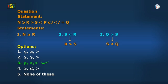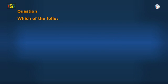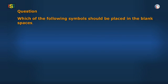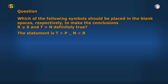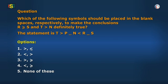In the given statement, which of the following symbols should be placed in the blank spaces respectively to make the conclusions — R greater than or equal to S, and T greater than N — definitely true? The statement is: T greater than P, dash N, N less than R, dash S. The options are on the screen.